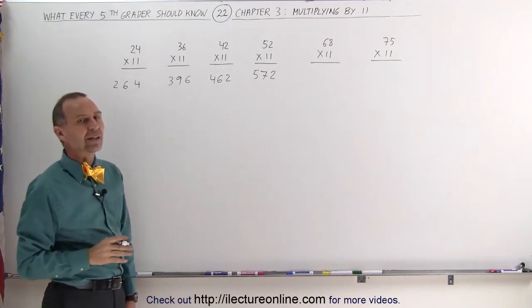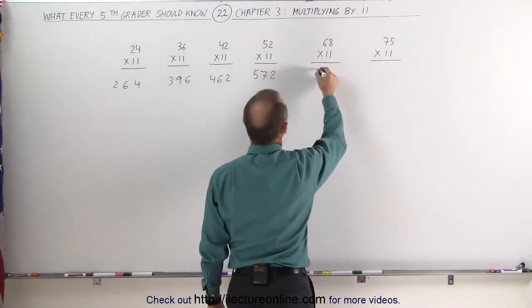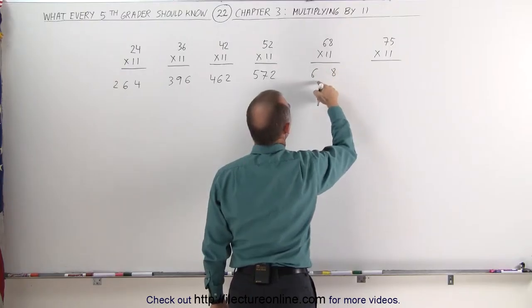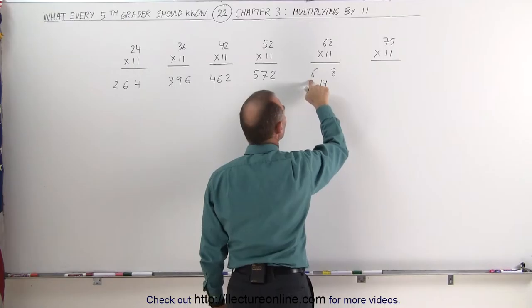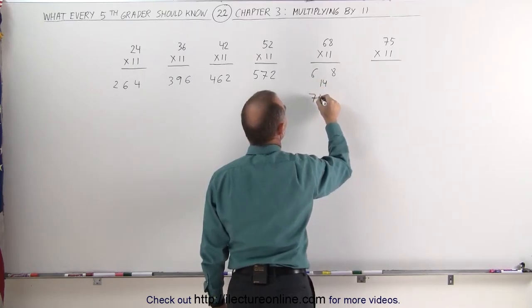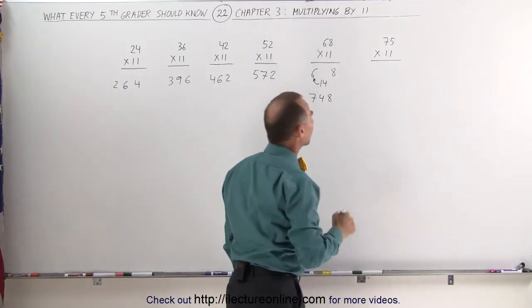Now, what about 68 times 11? That's a little bit more difficult because when you do that, you get 6 and you get 8, but when you add these together, you get 14. So you have to add the 1 to the 6 and this becomes 748. The 1 is added to the 6 to make that into a 7.